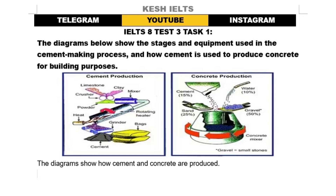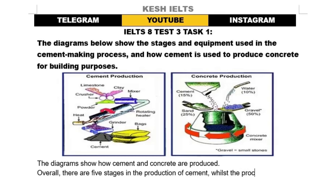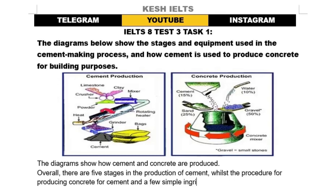Now I'll write the overall. 'The diagrams show how cement and concrete are produced. Overall, there are five stages in the production of cement, whilst the procedure for producing concrete involves a single stage involving cement and a few simple ingredients.'